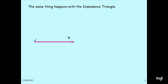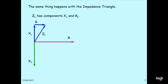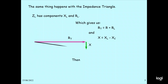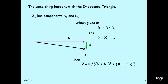The same thing happens with the impedance triangle. In this case we take XC and XL. ZL is the component with RL. The horizontal component is R plus RL, giving us Rd equal to R plus RL. And X equals XL minus XC. The combination gives Z equal to the square root of (R plus RL) squared plus (XL minus XC) squared. The phase angle theta equals arctan of X divided by Rd.